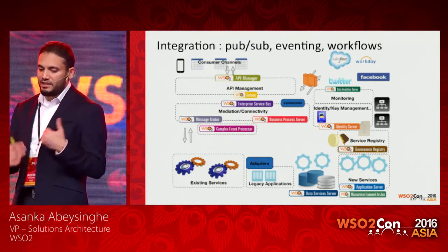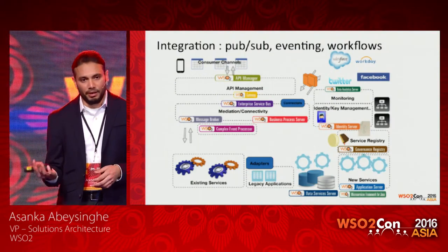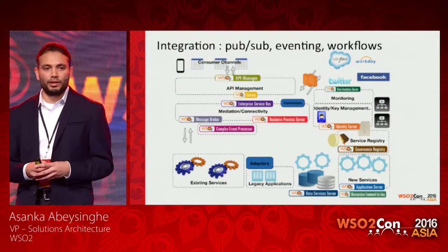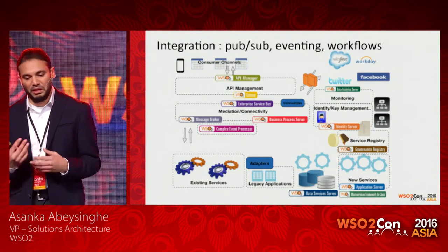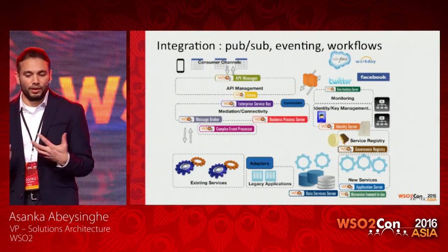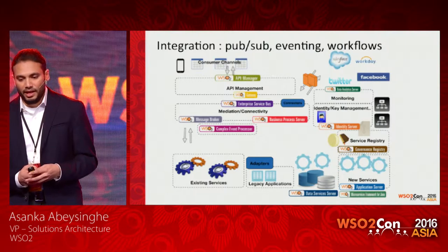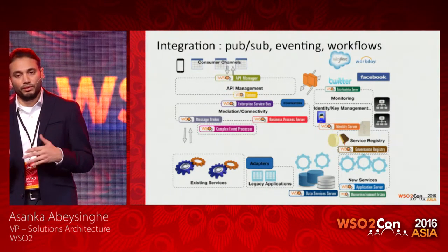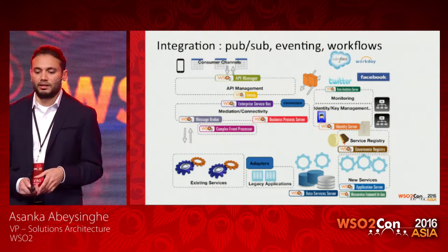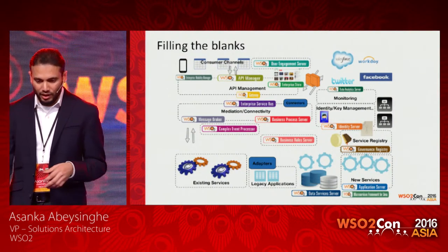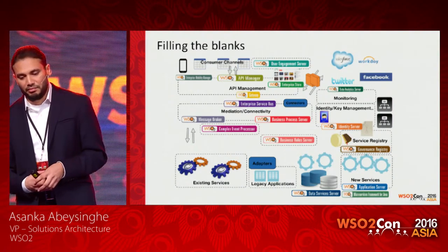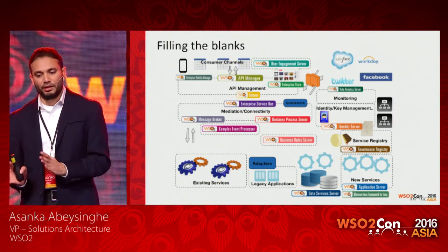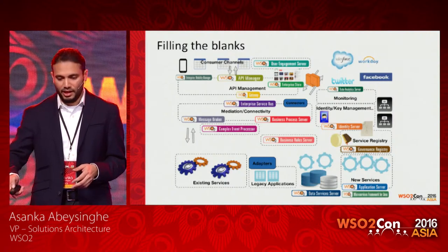You can't just survive with one integration pattern. You might need publish-and-subscribe or eventing, and you might need to implement workflows. You can bring runtimes like a message broker and a business activity monitor, and even extend with a complex event processor to filter events. Monitoring is another key feature — if you are using API management, you need to know who is invoking these APIs, so you can bring monitoring using a runtime like a data analytics server. You can then fill the blanks by bringing in runtimes like business rules storage based on your project requirements.